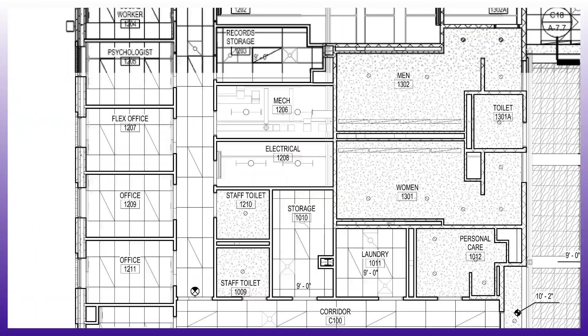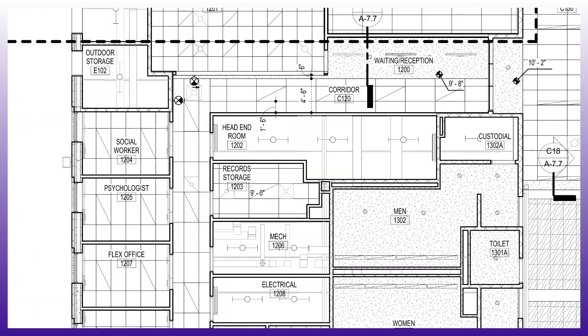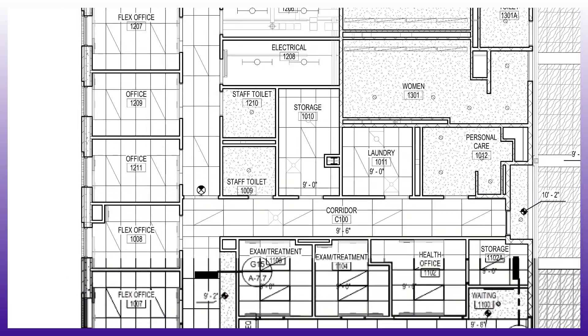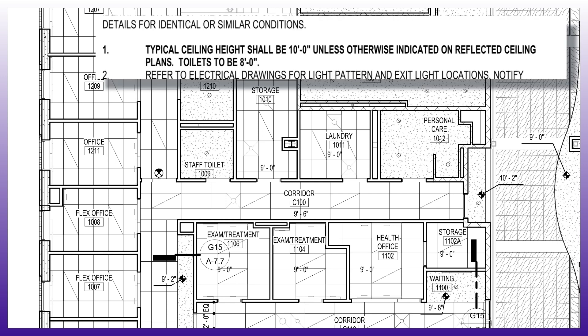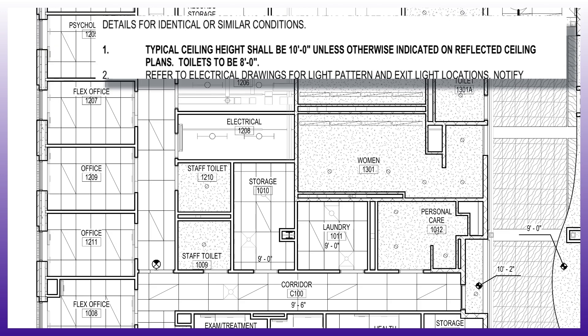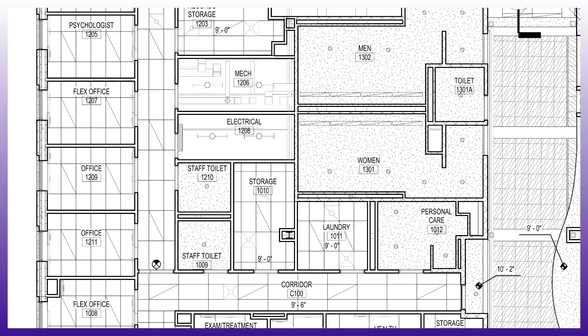You're looking at some rooms, like these offices here, and they don't have anything indicating what the ceiling height is. That's where that note applies — it's going to be 10 foot in here. And then the note also applies to the toilet rooms: the staff toilet room, the men's and women's restroom — all of those, according to that note, should be 8 foot.